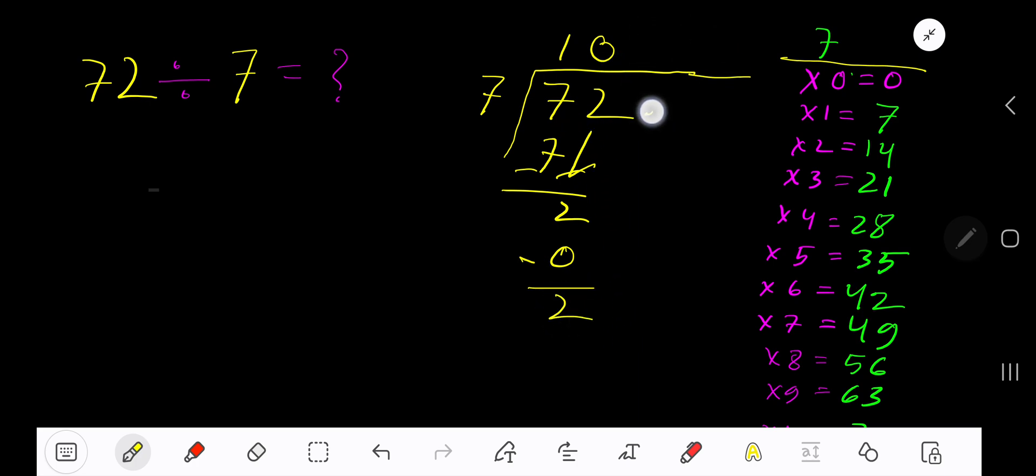If you want to write your answer in decimal form, then add a number of zeros. Bring down the first zero. The decimal must come to the quotient directly.